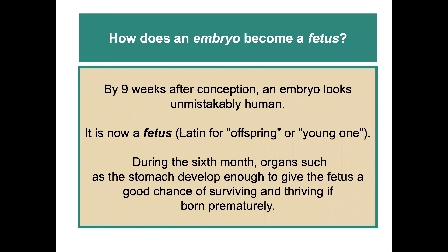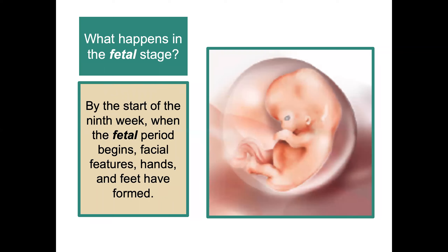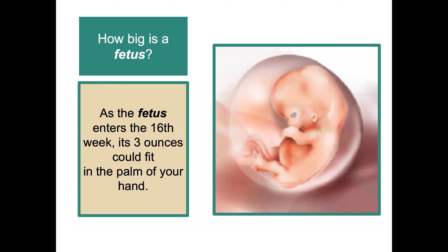By nine weeks after conception, the embryo begins to look unmistakably human and is now called a fetus. During the sixth month, organs such as the stomach develop enough to give the fetus a good chance of surviving and thriving if born prematurely. By the start of the ninth week, when the fetal period begins, facial features, hands, and feet have formed. As the fetus enters the 16th week, its three ounces could fit in the palm of your hand.